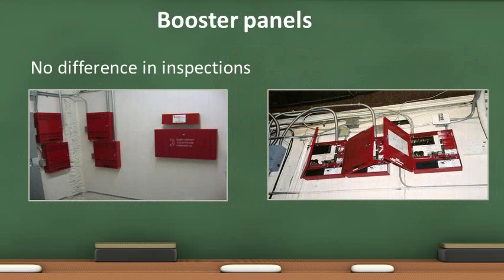Some fire alarm systems have booster panels, also known as PADs or NAC panels. PADs and NACs provide additional electrical current for the notification devices that are located great distances from the main fire alarm panel, such as in a mid- or high-rise building. Follow the same inspection procedures as a regular fire alarm panel. Look for the date of manufacture on the backup batteries and locate the circuit breaker to ensure it is labeled.